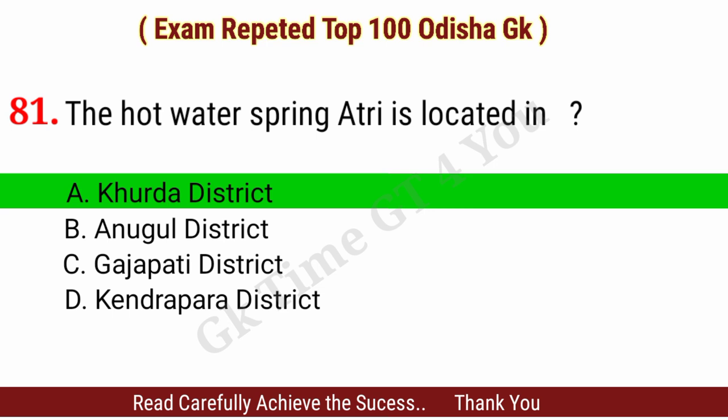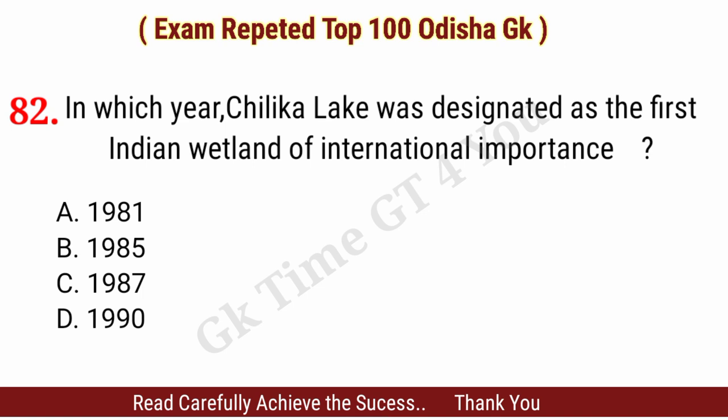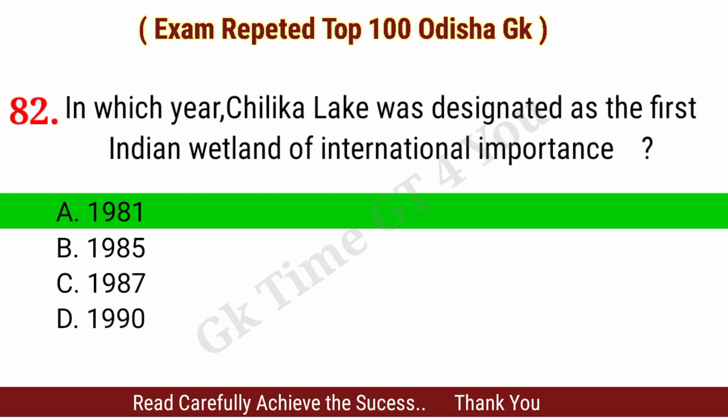Question number eighty-two: In which year was Chilika Lake designated as the first Indian wetland of international importance? Right answer, option A: 1981.